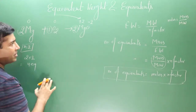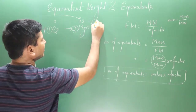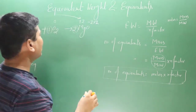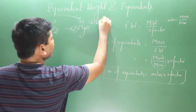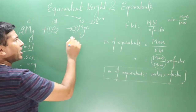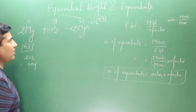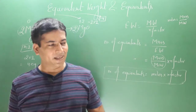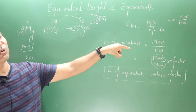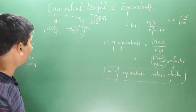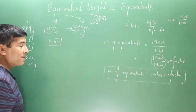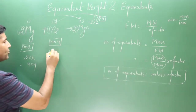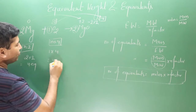For oxygen: it has zero oxidation number as O₂. In MgO, each oxygen is −2. Since there are two oxygen atoms on the left side, we balance: −2 × 2 = −4. Decrease from 0 to −4 is reduction (gain of electrons). Difference: 0 − (−4) = 4. N-factor for O₂ is 4. Moles × n-factor = 1 × 4 = 4 equivalents.